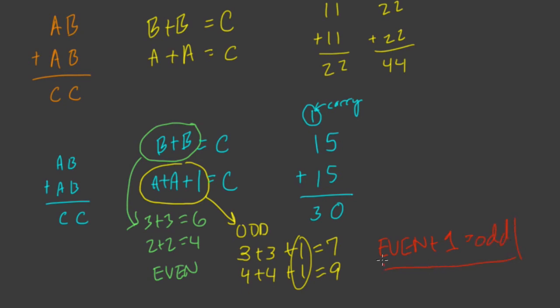So the idea in this problem is, hey, A plus A and B plus B can never both equal C. Even when you carry, when you end up carrying, A will always be an odd value, and B will always be an even.